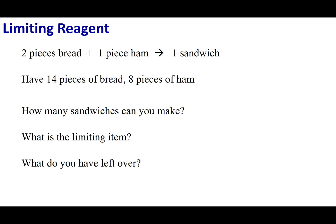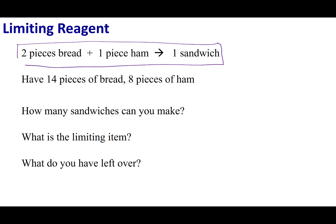What I'm going to do is give you a chemical equation. Now instead of using chemicals, I'm going to give you a recipe — which is exactly what a chemical equation is. So here's my recipe for a sandwich — a really terrible sandwich. My recipe calls for two pieces of bread and one piece of ham, and this is going to yield one sandwich.